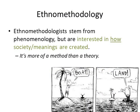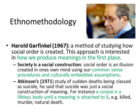Ethnomethodology and ethnomethodologists stem from phenomenology and phenomenologists — they share a lot in common, but are more interested in how society and meanings are created. This is more of a method than a theory, looking at the method by which these things are created. Harold Garfinkel defined ethnomethodology as a method of studying how social order is created. He said that society is a social construct — social order is an illusion created in one's own mind using common sense procedures and culturally embedded assumptions. There is no natural social order; we create it.